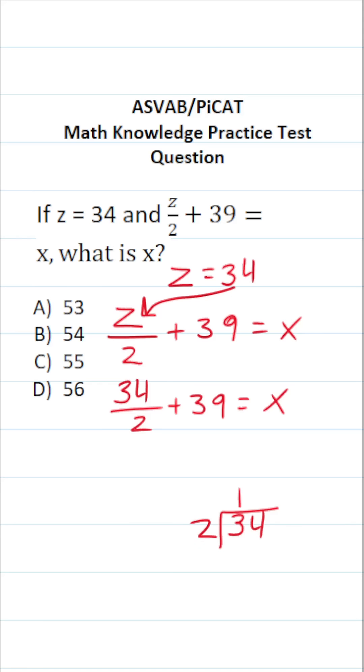2 goes into 3 one time without going over. 1 times 2 is 2. 3 minus 2 is 1. Now you drop down this 4. 2 times 7 is exactly 14, and 14 minus 14 is nothing. So 34 divided by 2 is 17.